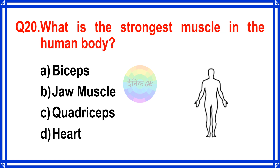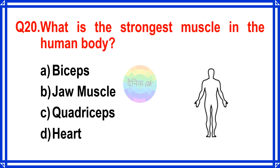What is the strongest muscle in the human body? The correct answer is Option B. Jaw muscle.